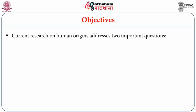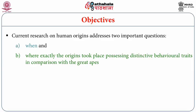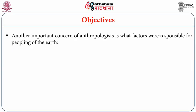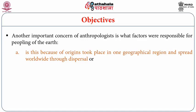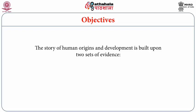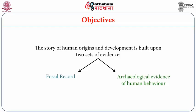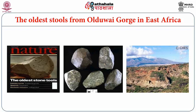Current research on human origins addresses two important questions: when and where exactly the origins took place, possessing distinctive behavioral traits in comparison with the great apes. Anthropologists also ask what factors were responsible for the peopling of the world — whether origins took place in one geographical region and spread through dispersal, or in multiple regions. The story of human origins is built upon two sets of evidence: the fossil record and archaeological evidence of human behavior. Illustrations here give a brief idea of migration out of Africa and the various types of human ancestors located in eastern Africa.